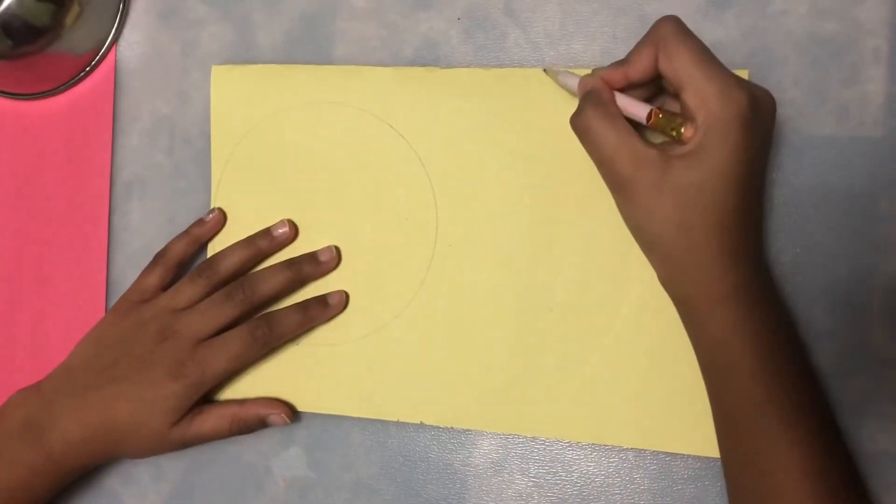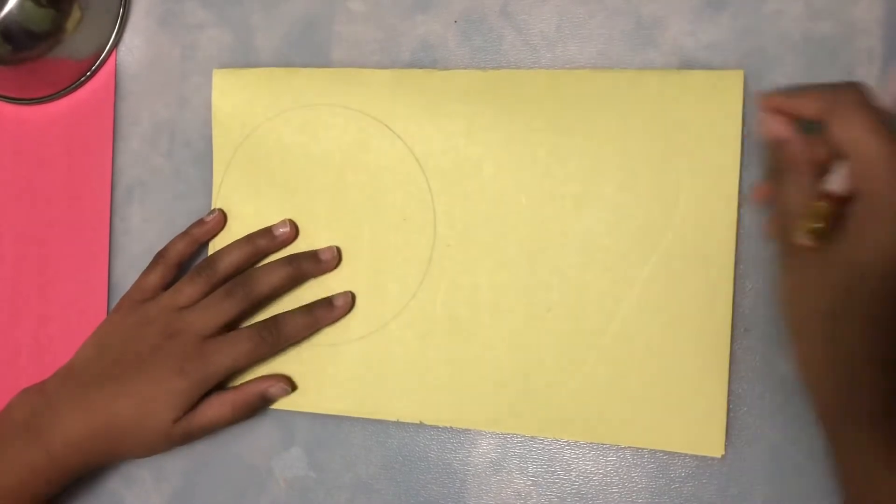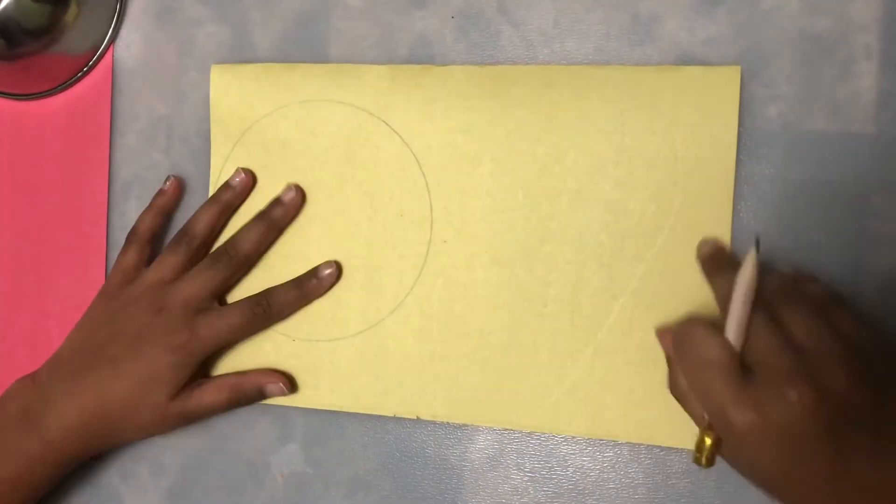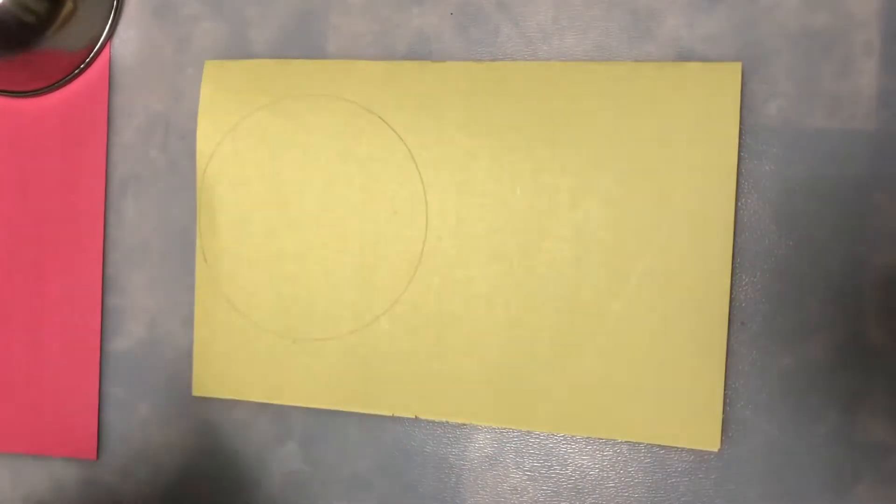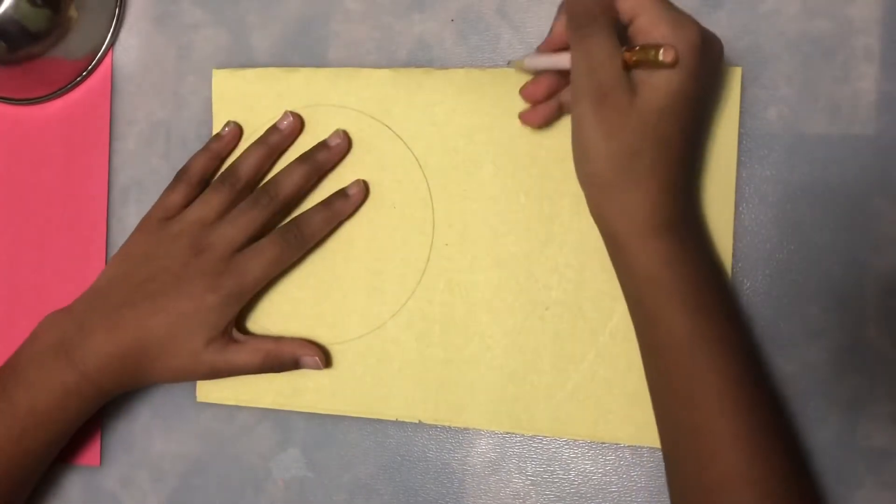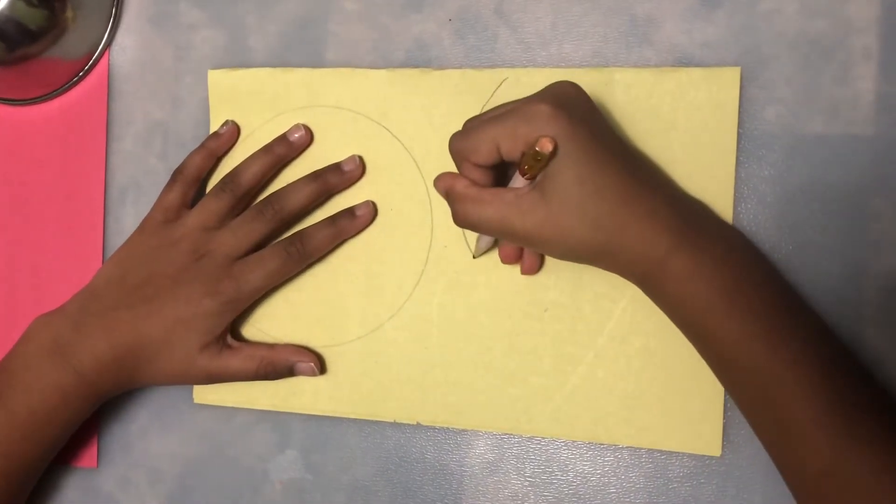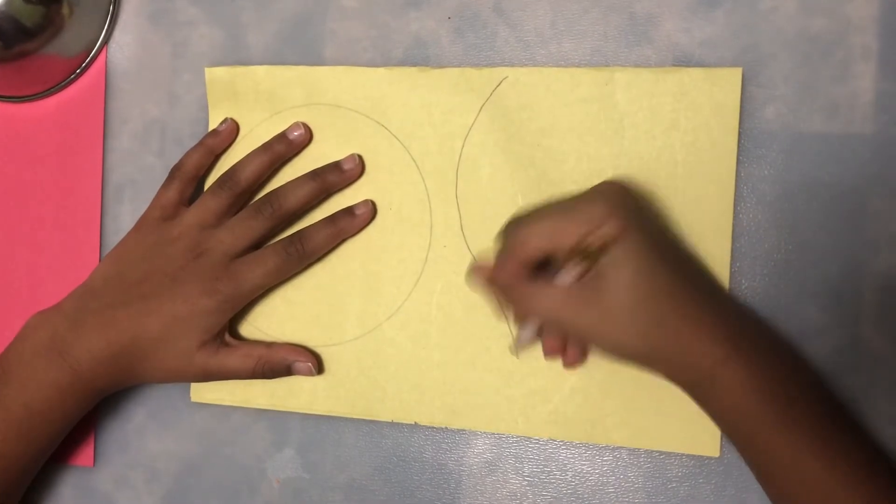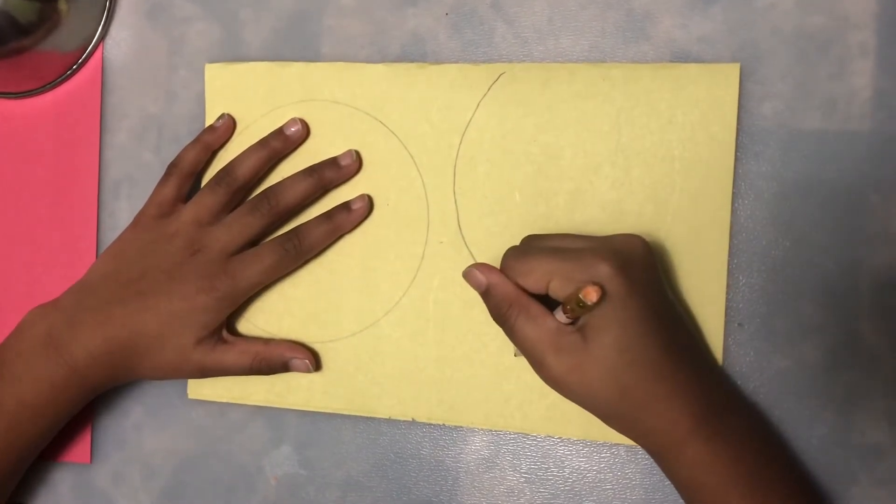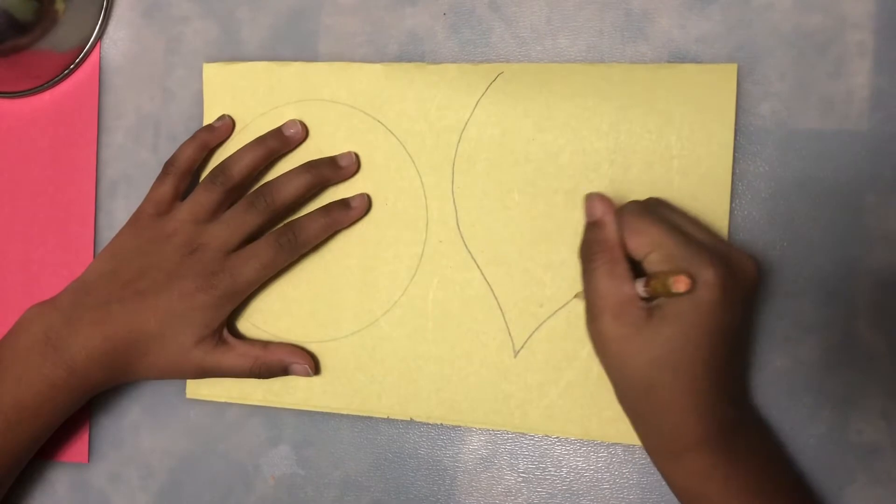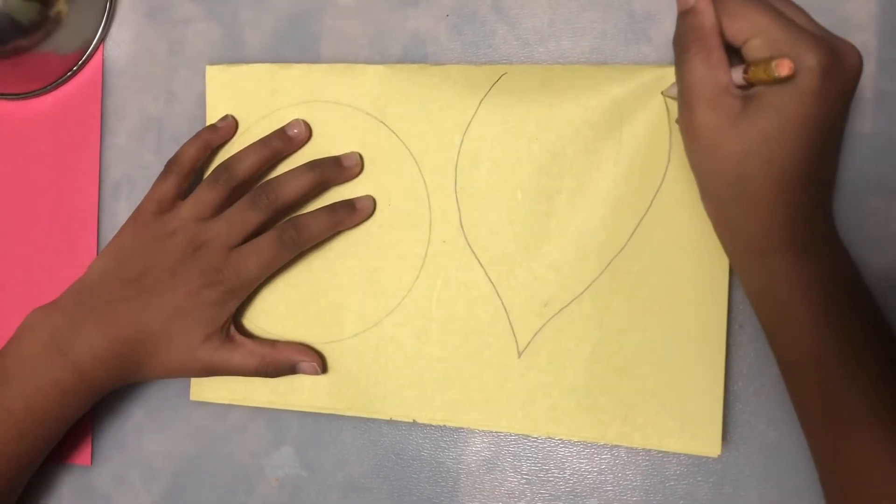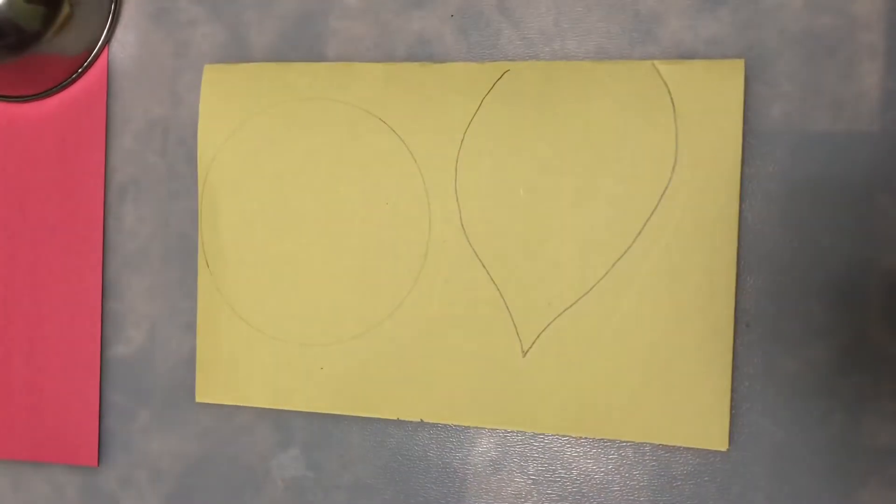Next you want to make the body and we want to use the whole paper, the rest of the paper we have. We want a big body. So we're gonna start from here and go like this and go down and make a point and make it curve. Like that! That's our body.